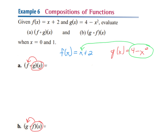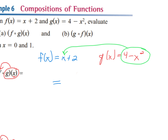Let's write them down. Your F function is x plus 2 and your G function is 4 minus x squared. Part A is asking you to take the G function and plug it into where there are X's in the F function. So I take my F function, and instead of X I write 4 minus x squared, then continue with plus 2. Combine like terms: 4 and 2 give negative x squared plus 6.